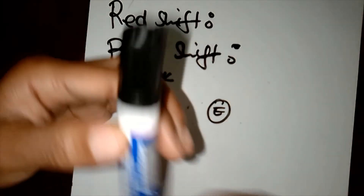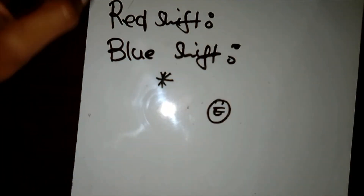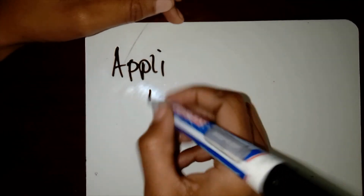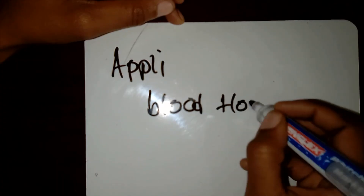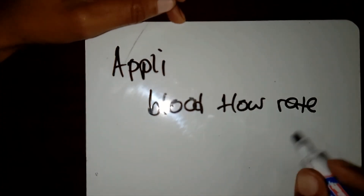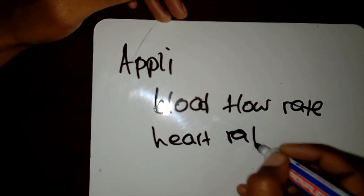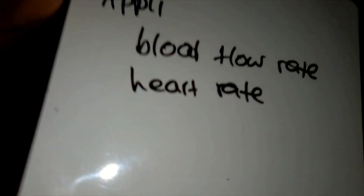To finish off our discussion, we can talk about a few applications of the Doppler effect. It can be used in medicine, where we measure the rate of blood flow. Another application is to observe the heart rate of a fetus. We can also use it to check whether stars are moving away and use that as proof that the universe is essentially expanding.